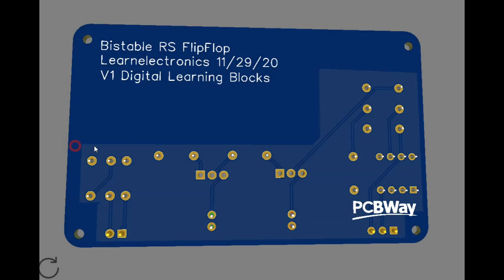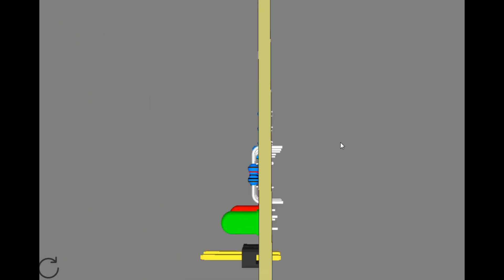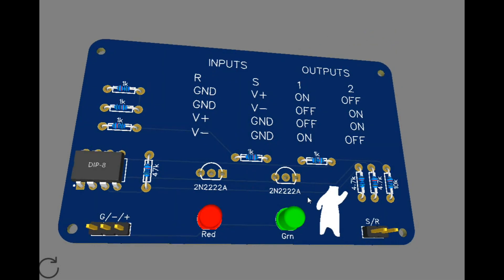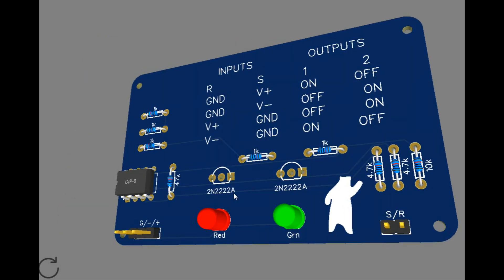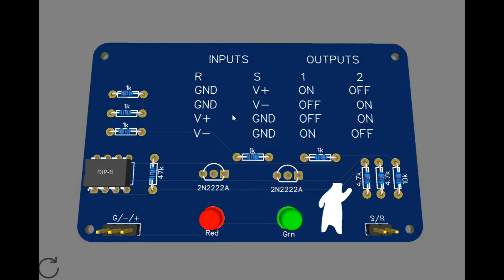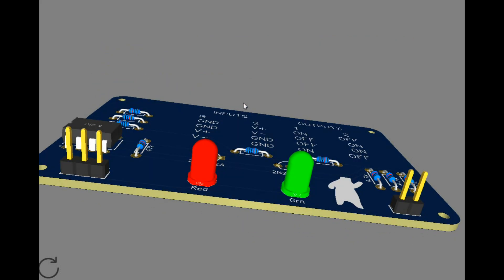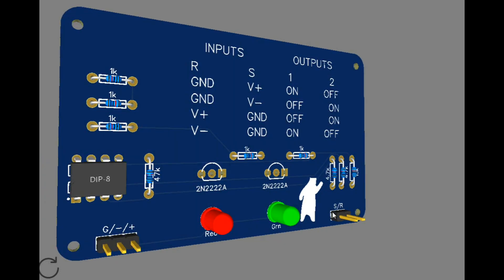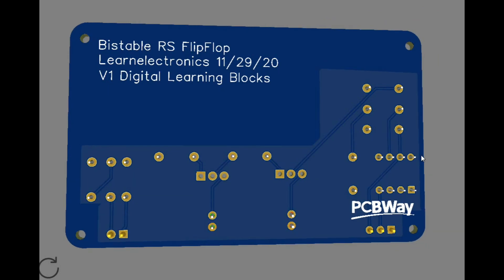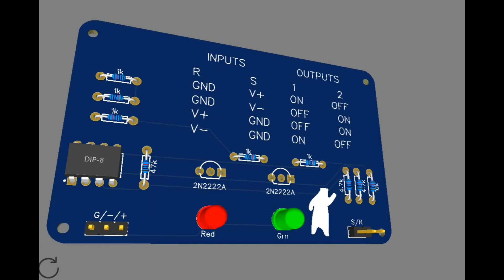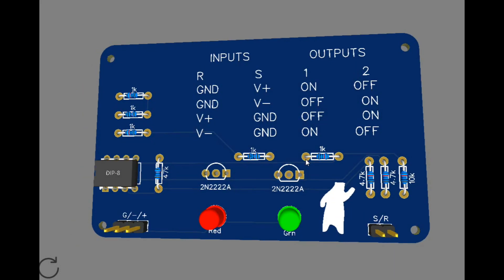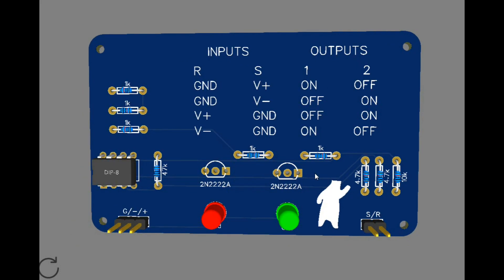I did a ground plane on this board, and this is going to be the first entry in my digital logic learning series. We're going to make a bunch of these boards over the next year in 2021, where you can learn about digital logic, truth tables, and how things work. Once we have enough of these put together, you'll be able to build a little 4-bit or 8-bit computer using these blocks.